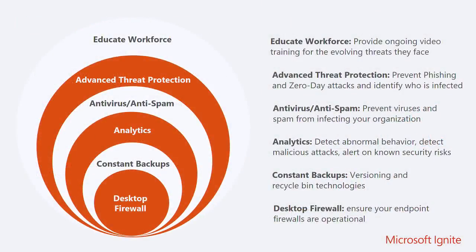We don't want to just say ATP is the answer to everything - it is a layered defense and we recommend a defense in-depth strategy. That includes operating a firewall on the host, having backups of your data - we have a great white paper on data resiliency in Office 365 covering versioning and recovering from ransomware. There's also analytics, anti-virus, anti-spam, and exchange online protection as part of every Exchange Online license. Advanced threat protection sits on top of that for additional zero-day protection. Educating the workforce is still really important - you need to talk to your people about what a phishing campaign looks like. Should you respond when you see an email from the CEO saying please transfer $25,000 to this account?